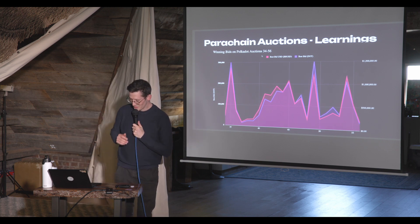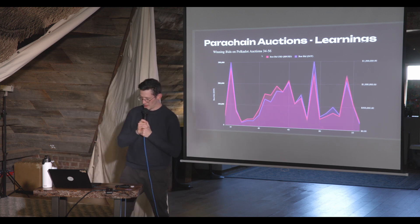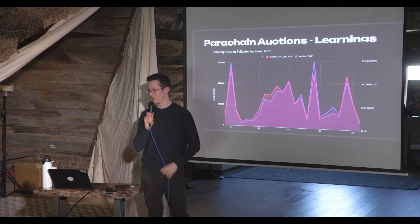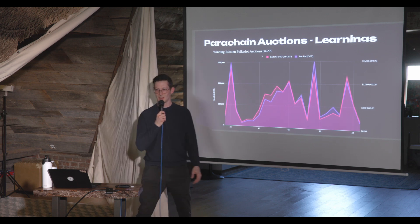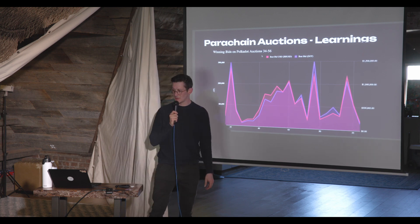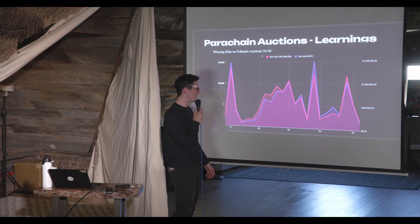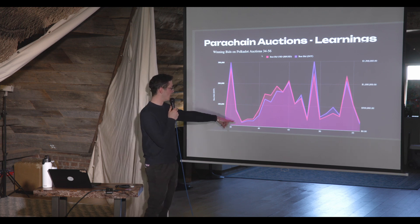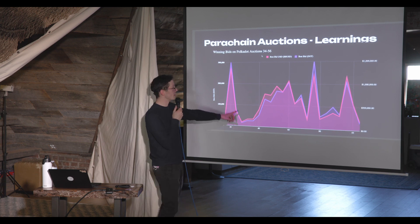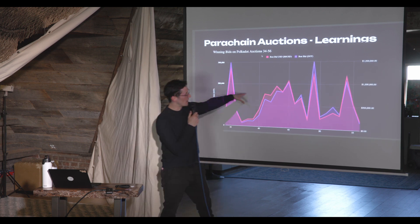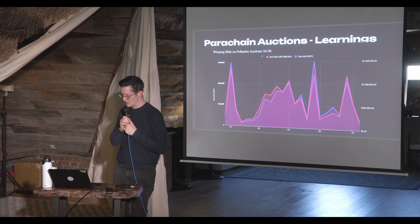Looking at this graph, at the beginning of Polkadot there were huge amounts of DOT being locked up, and they all got unlocked recently for the first time. Even during the bear market, we've seen high demand for Polkadot's core time and block space — the lowest bids were around $100,000, the highest up to $1.5 million, with an average around $800,000–$900,000 per month.